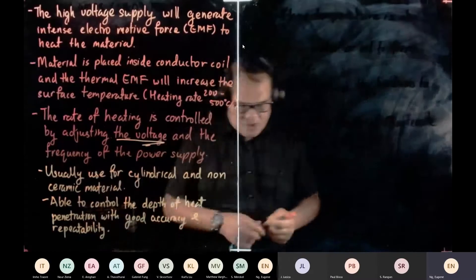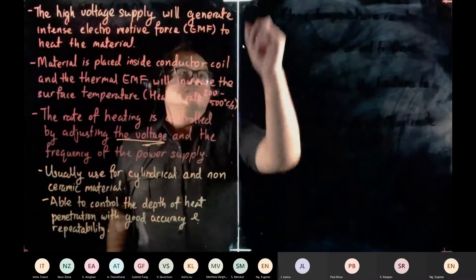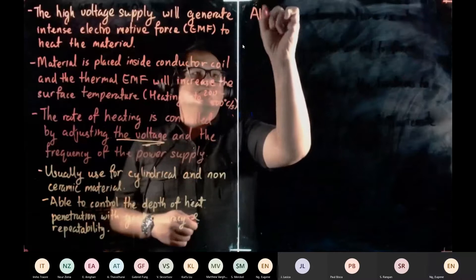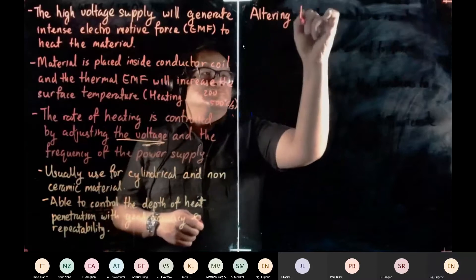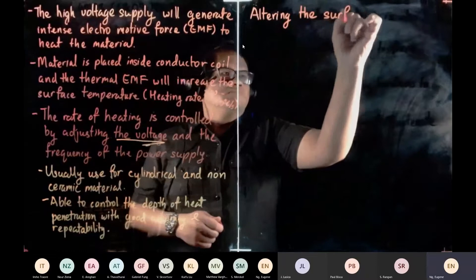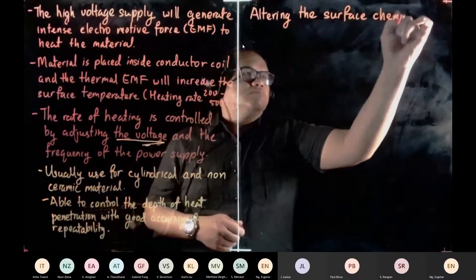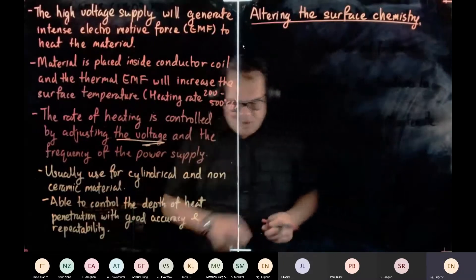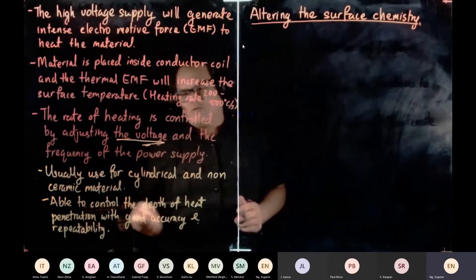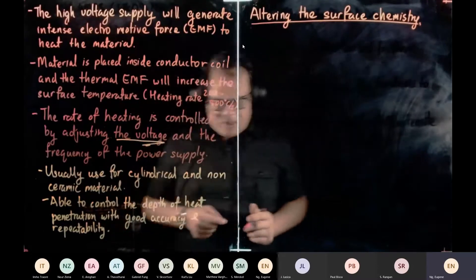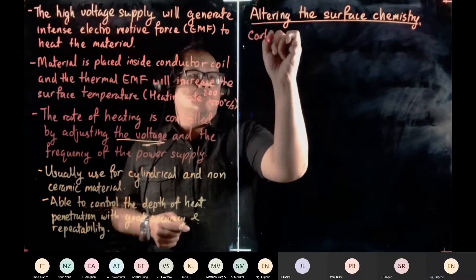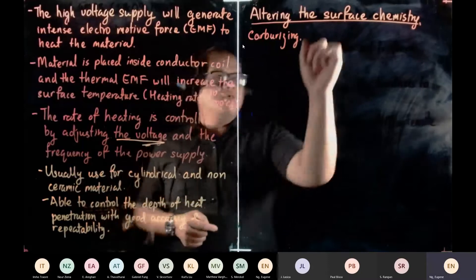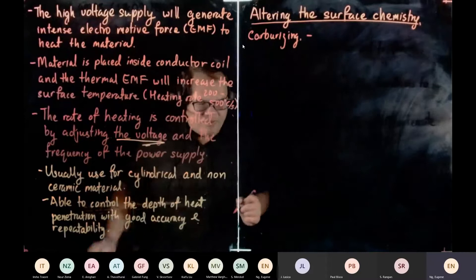So the next one is to alter, altering. We alter the surface chemistry. So it's what we call, especially for steel. As I said, we are focusing on steel. So it's what we call carbonizing. Carbonizing. So carbonizing, the purpose of carbonizing is we're going to diffuse carbon.